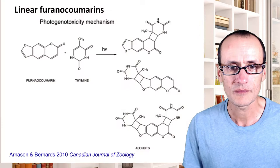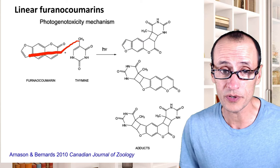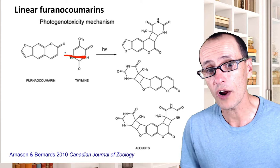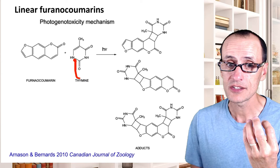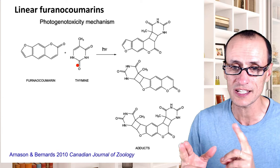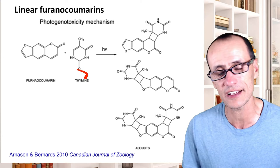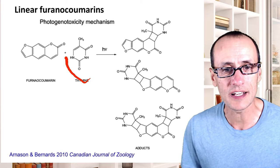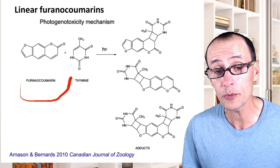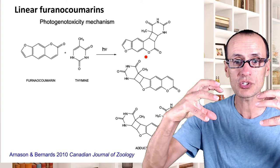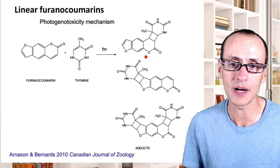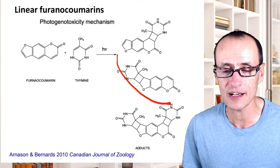One of the interesting things about linear furanocoumarins is that in the presence of light, they have the ability to cross-link the base pairs present in DNA. The T, C, G, and A base pairs form the codes of our genetic signals. Furanocoumarins can actually bind to them and lock themselves into the double-stranded piece of DNA, preventing replication and translation from happening. These cross-linking events can be quite damaging to DNA and quite toxic as a result.